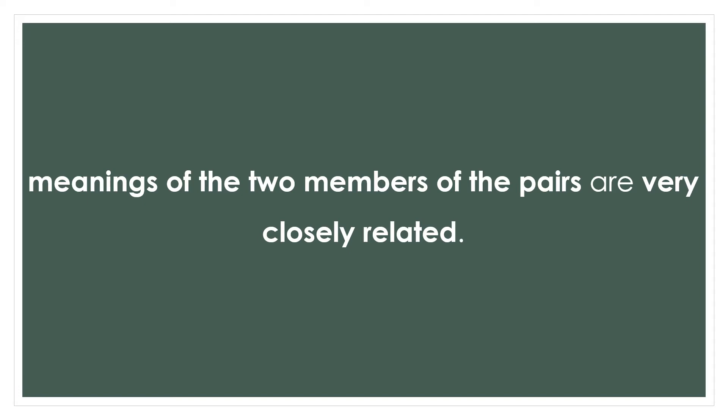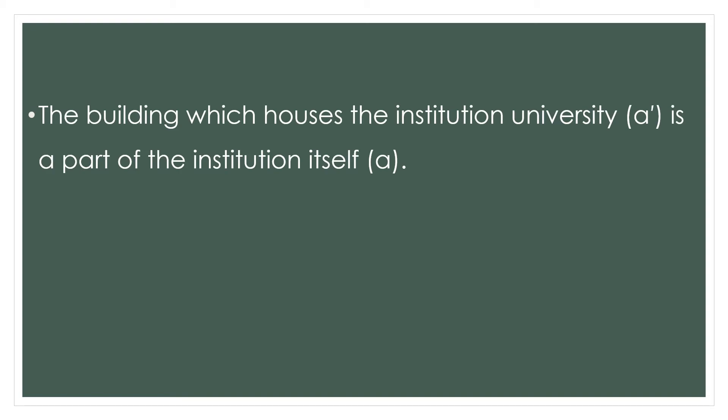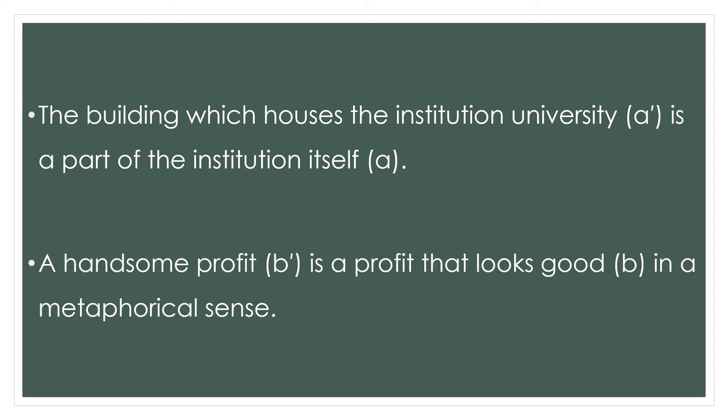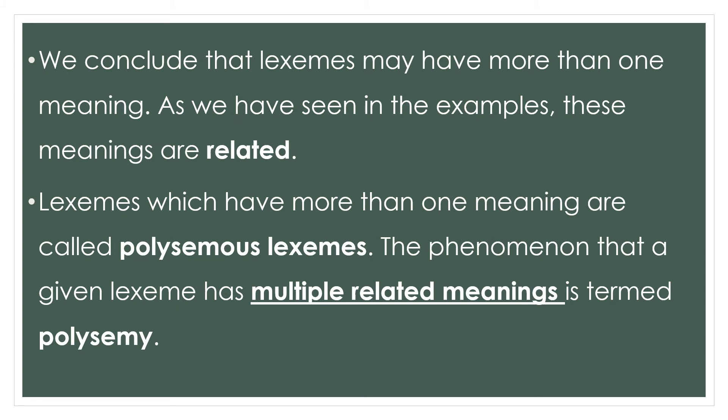We can see the meanings of the two members of the pairs are very closely related. The building which houses the university is a part of the institution, and a handsome profit is a profit that looks good. As we have seen in the examples for 'university' and 'handsome', these meanings are related. Lexemes which have more than one related meaning are called polysemy.